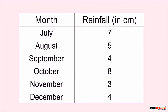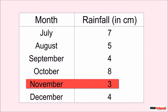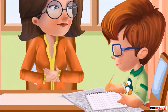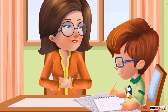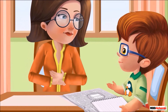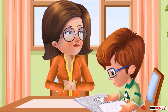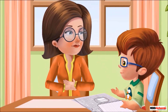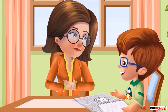Neil says that in the month of October the rainfall is the maximum, and in the month of November the rainfall is the minimum. His mother asks him, "Can you represent this data in pictorial form?" Neil replies, "Yes, it can be represented in the form of a pictograph and bar graph. I can draw a pictograph but I don't know how to draw a bar graph."